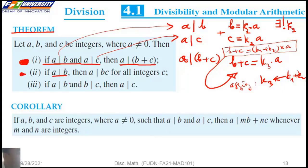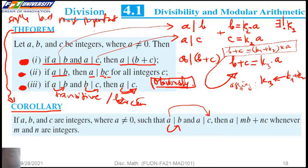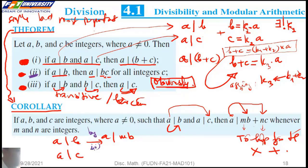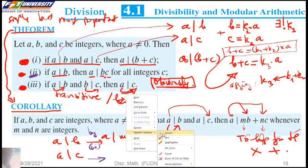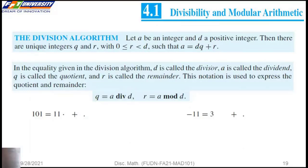And the second one: if a divides b, then a divides b times c. And if a divides b and b divides c, we have a divides c. This is simple but important. From the theorem, we have the corollary. If we have a divides b and a divides c, then a divides the sum of two products. By the theorem, we have a divides mb and a divides nc. Because we have a divides b and a divides c, it means we have a divides b plus c. So here a divides mb plus nc.